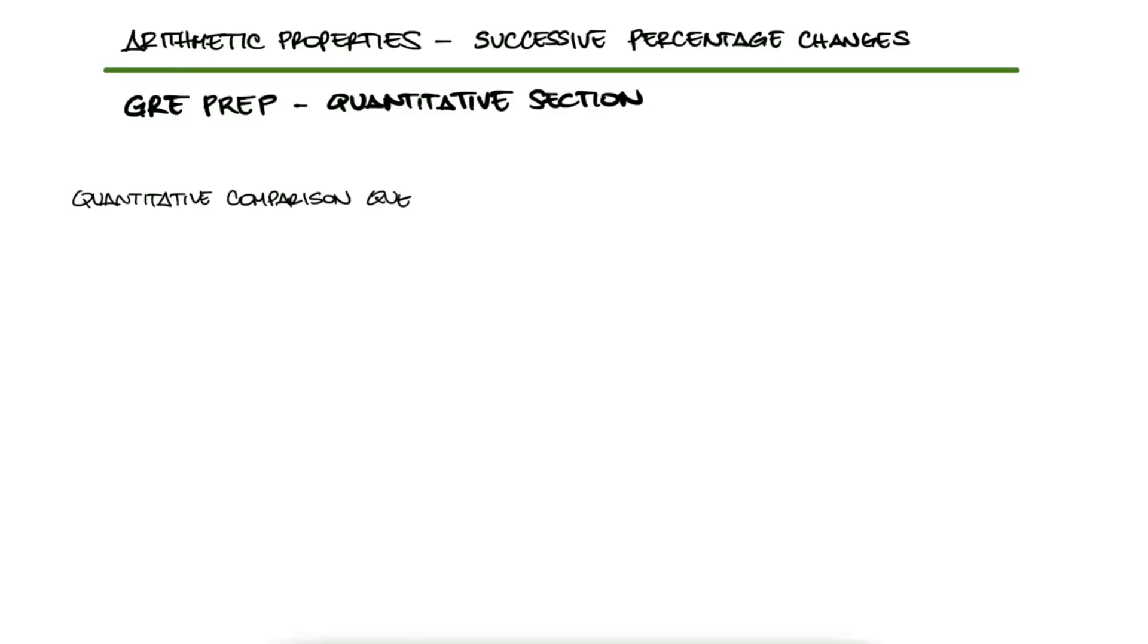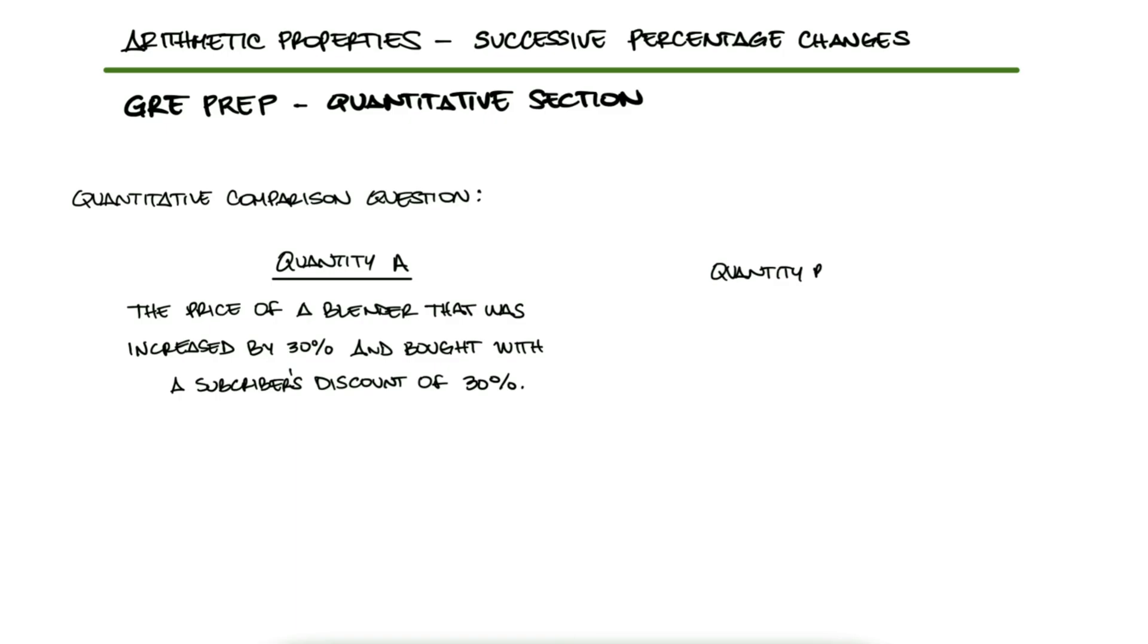A quantitative comparison question shows quantity A, the price of a blender that was increased by 30% and bought with a subscriber's discount of 30%, and quantity B, the original price of the blender.